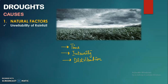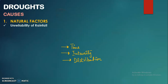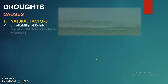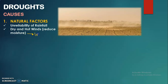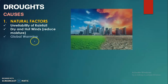The second natural factor is dry and hot winds. Whenever we have dry hot winds, they eventually lead to less moisture in the air. When there is less moisture, the amount of rainfall would be low, and eventually that lower rainfall would create a drought-like condition.